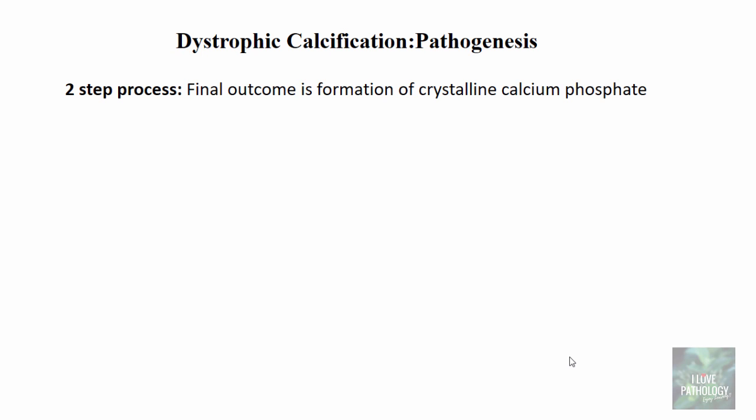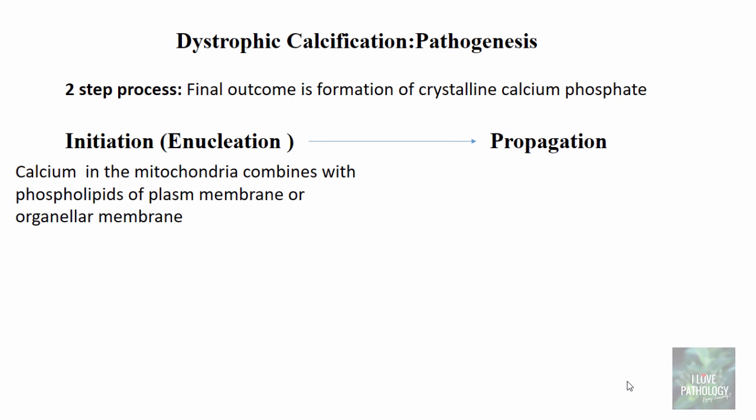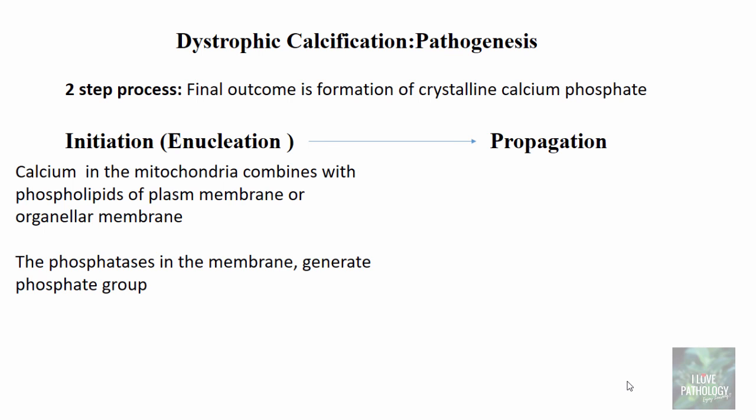Now let us understand the pathogenesis of dystrophic calcification in detail. The final outcome is the formation of crystalline calcium phosphate, and this happens as a two-step process: initiation and propagation. Initiation is also referred to as nucleation. In initiation, the calcium in the mitochondria combines with the phospholipids of the plasma membrane or the membranes of organelles. In dead tissues there is increased calcium within the cell, leading to calcium accumulation in the mitochondria. Phosphatases in the membrane release the phosphate group, and the calcium binds with phosphate to form calcium phosphate.